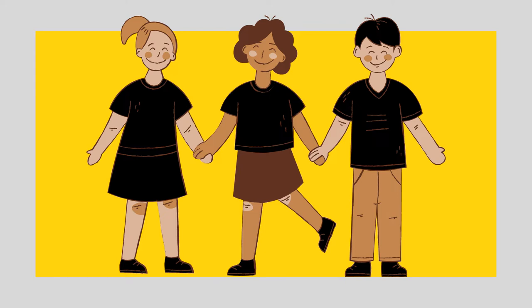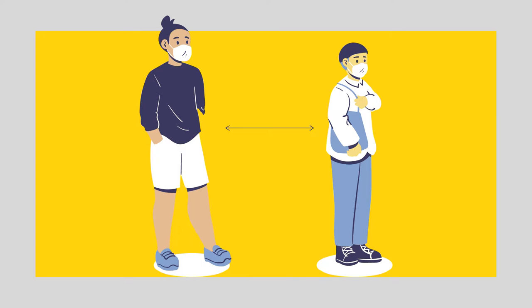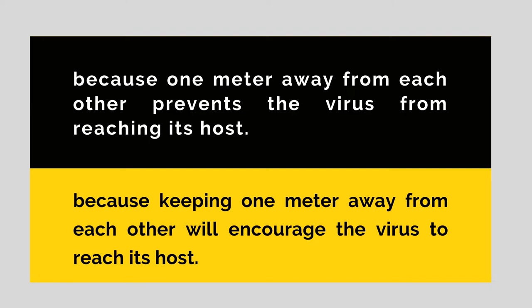Here is the second picture. What statement will support your answer? Because touching the hand of a person will melt the COVID-19 virus? Or because touching the hand of a person might cause the transfer of virus from one hand to another? Third picture. Does the picture show a helpful way of stopping the spread of COVID-19? Is it because one meter away from each other prevents the virus from reaching its host? Or because keeping one meter away from each other will encourage the virus to reach its host?